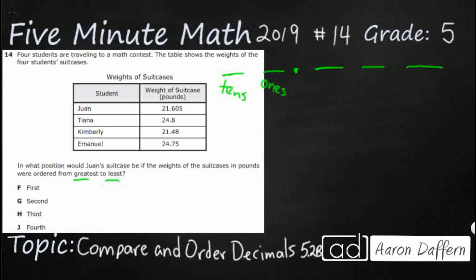Go back to your anchor, your decimal point. Look to the right — your first place is going to be your tenths. It kind of mirrors what you see on the left: we skip the ones and add a -THS, so we get hundredths. Then instead of hundreds we get hundredths, and instead of thousands we get thousandths.